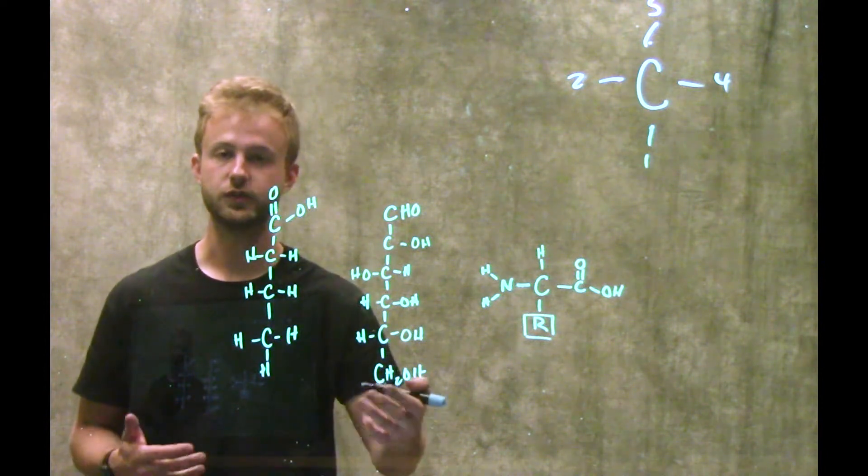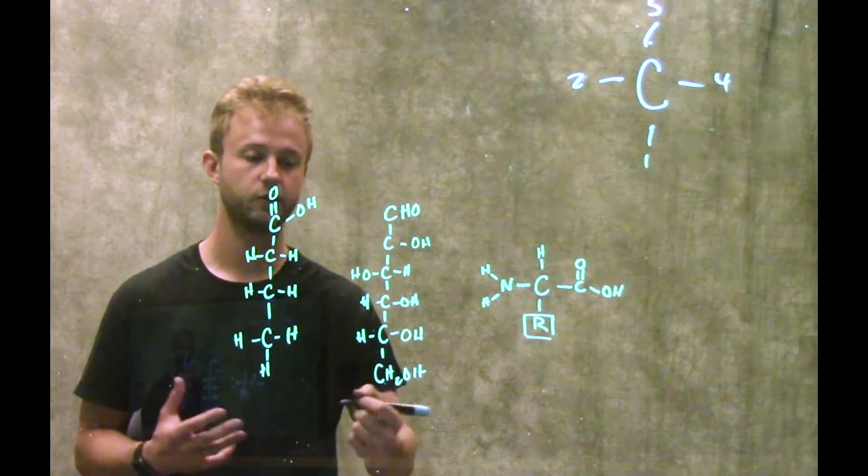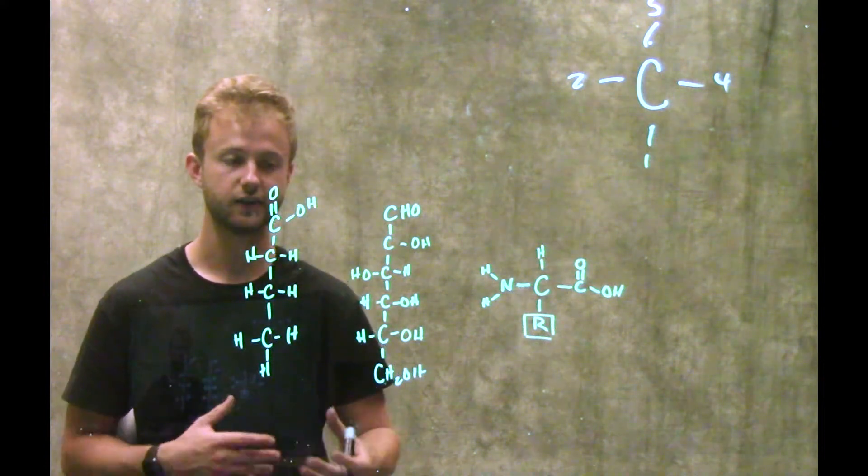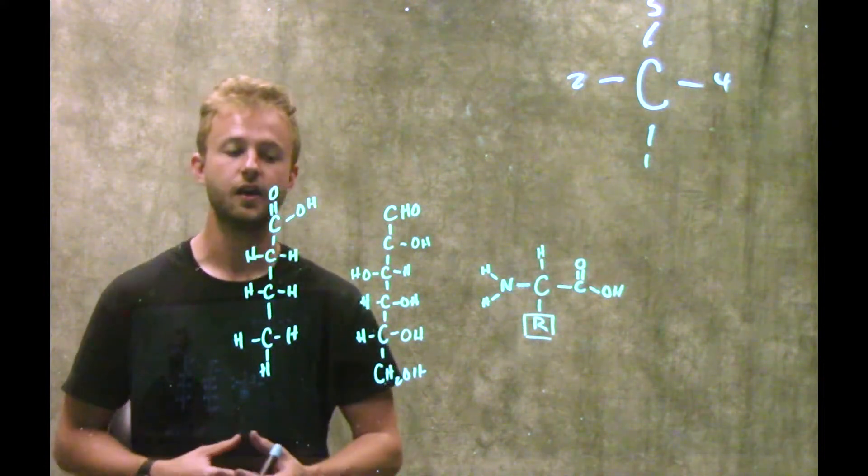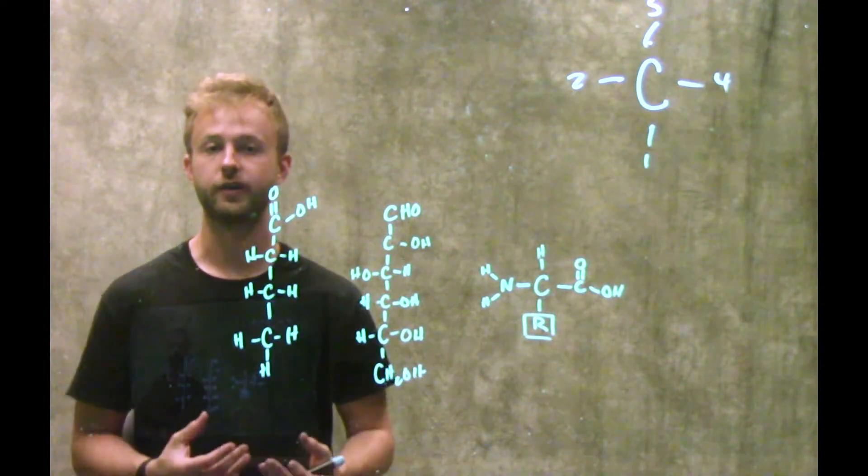Moving on to this molecule which is glucose, so that's going to be a carbohydrate. Again we can see carbon being bound to all sorts of different things like hydrogens, oxygens, other carbons. And again it's able to do this because of its ability to form four covalent bonds.